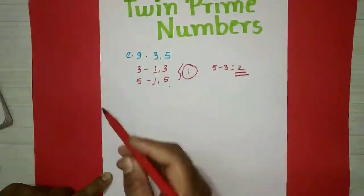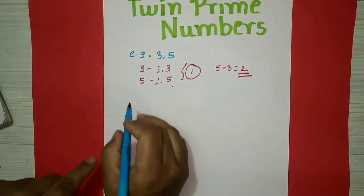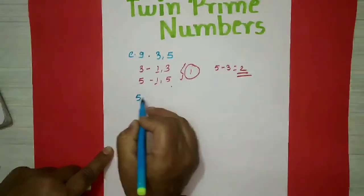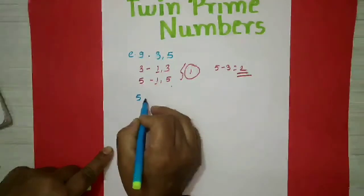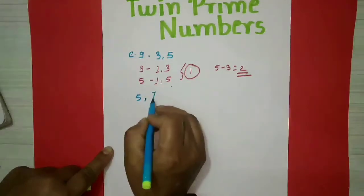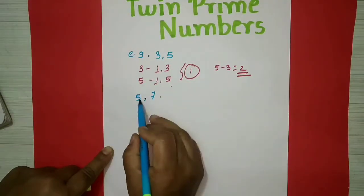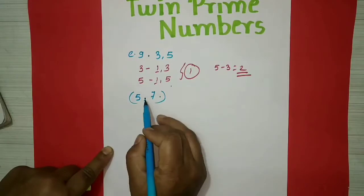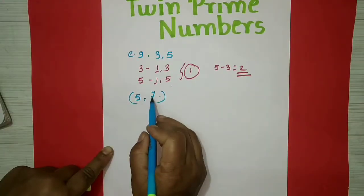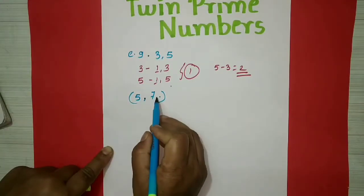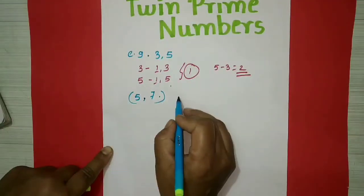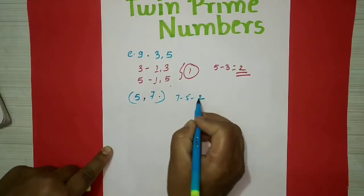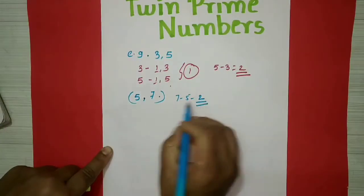One more example: 5 and 7. Both 5 and 7 are co-prime numbers, and the difference between these two is 2. So these are twin prime numbers.